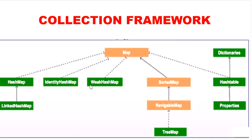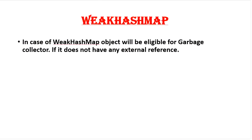The next one is WeakHashMap. It is exactly the same as HashMap except for one difference. In HashMap, an object is not eligible for garbage collection even though it has no external reference if it is associated with the HashMap. But in the case of WeakHashMap, even though an object is associated with it, it will be eligible for garbage collection if it does not have any external reference.